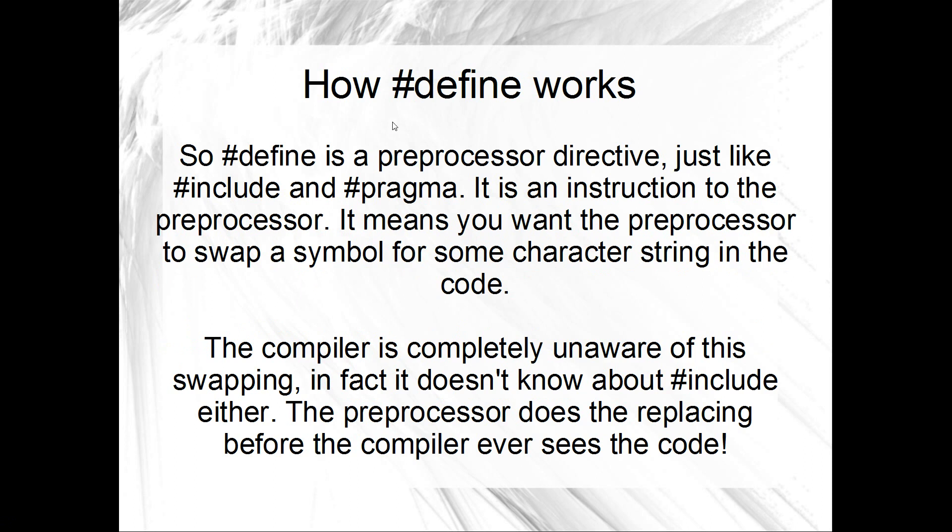Okay, so be that as it may, how does Define work? Define is a preprocessor directive, just like Include and Pragma, and what it is is it's an instruction to the preprocessor that we want the preprocessor to swap some symbol for some other string in the code. So we give it a symbol, say my symbol or something like that, and then we give it some other string that we want it to swap. Yeah, every time it finds my symbol, we want it to swap it for some other string. And that's just about as complicated as it gets.